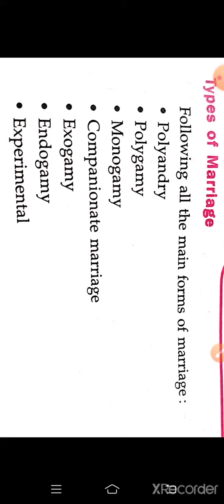Marriage types include Exogamy and Endogamy. In Exogamy, a man marries outside his own caste. In Endogamy, both the man and woman marry within the same caste.